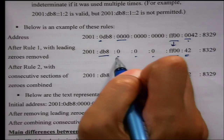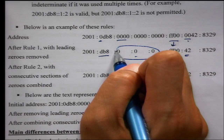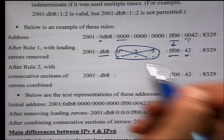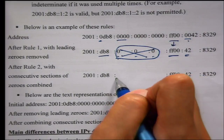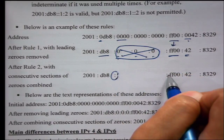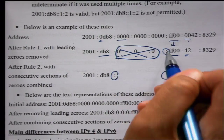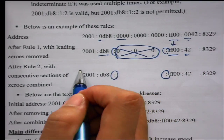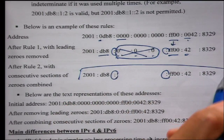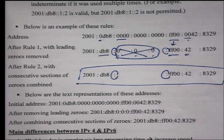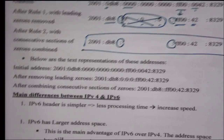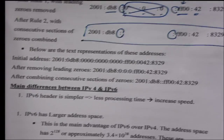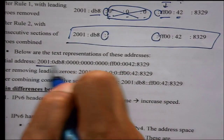Then the consecutive zero groups can be combined using a double colon. So it ends up as a much shorter address than the original full form.